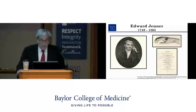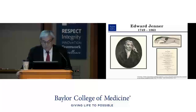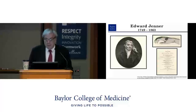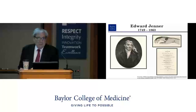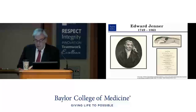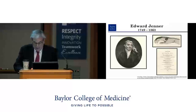Edward Jenner lived in the latter half of the 18th century into the 19th century and is famous for his work understanding the relationship of cowpox to smallpox. He observed among the milkmaids of the farming country that they rarely got smallpox, and he knew they had gotten lesions on their hands related to cowpox from the cows themselves. He made the empirical observation that they did not have a high frequency of developing smallpox.